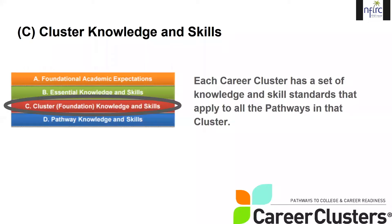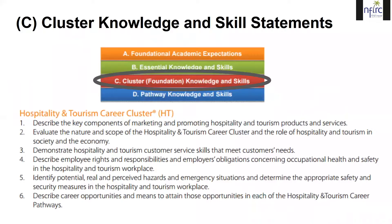Let's look at level C, the cluster knowledge and skills. Remember, the cluster is the group of pathways, so this is a set of knowledge and skill standards that apply to all the pathways in that cluster. Earlier we used the example of the hospitality and tourism cluster. Here you see some sample statements of cluster-level skills common to all the cluster pathways — so whether studying restaurants, hotels, tour services, or convention bureaus, all of these same skills apply in this particular cluster.